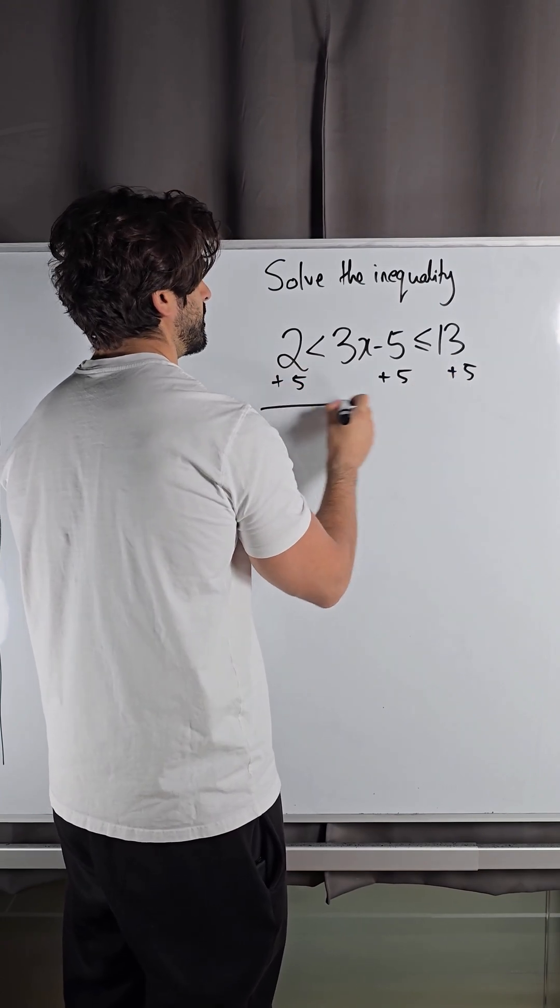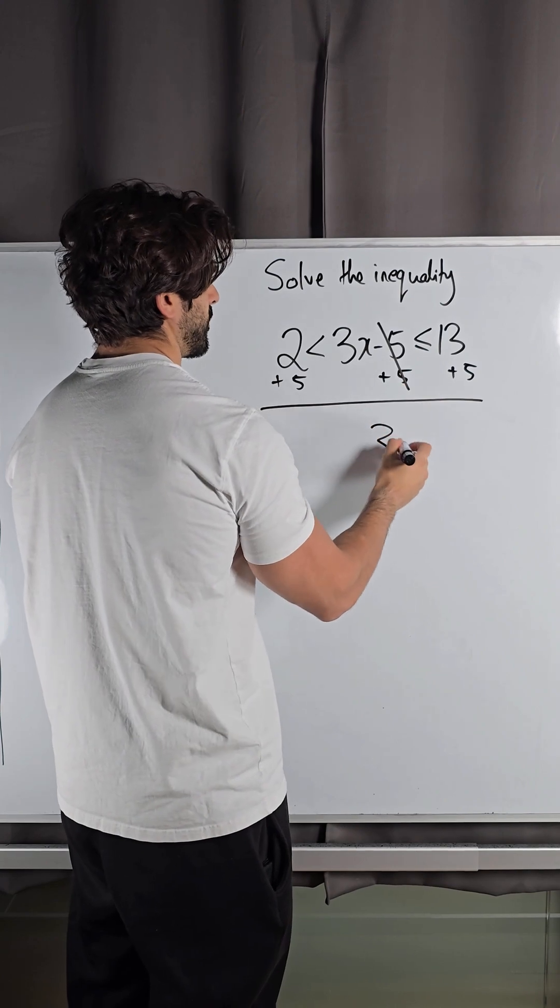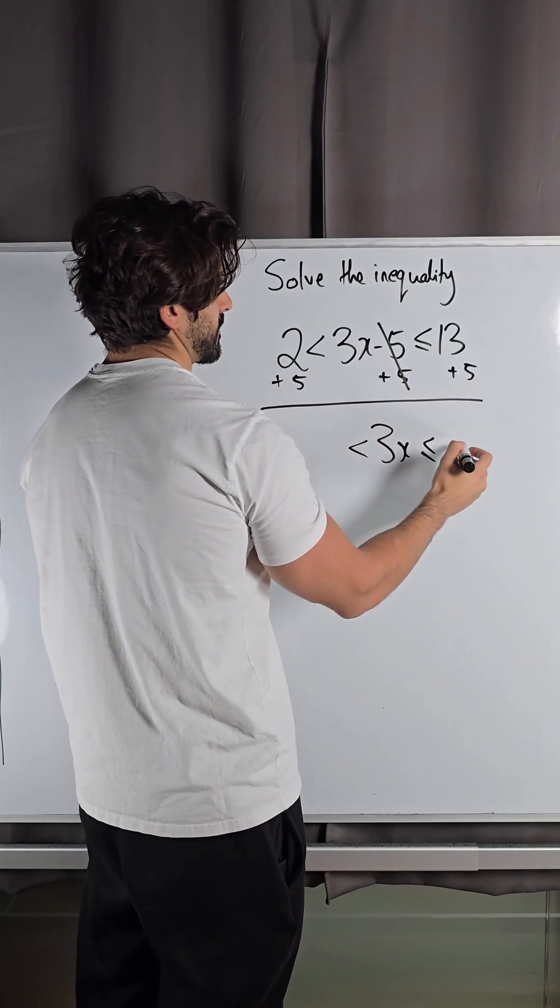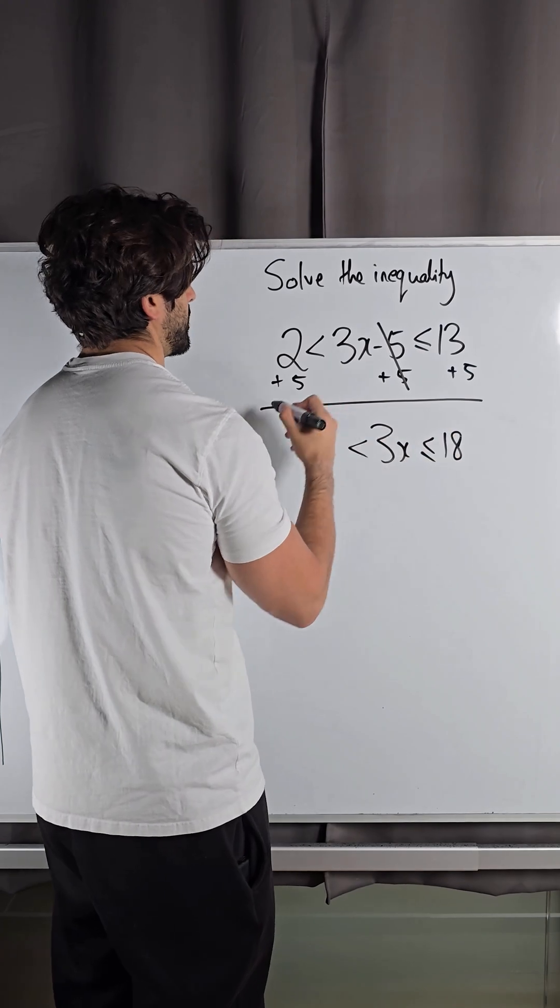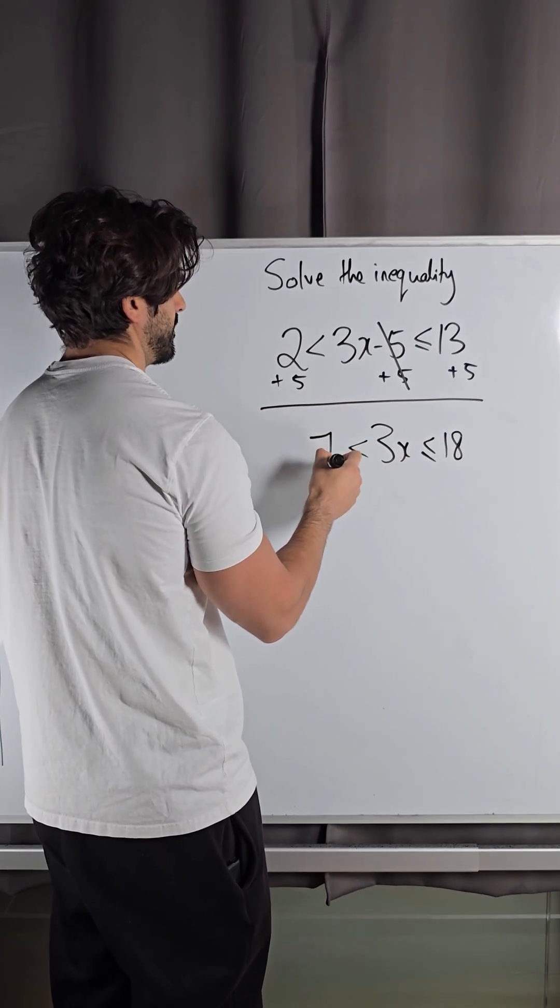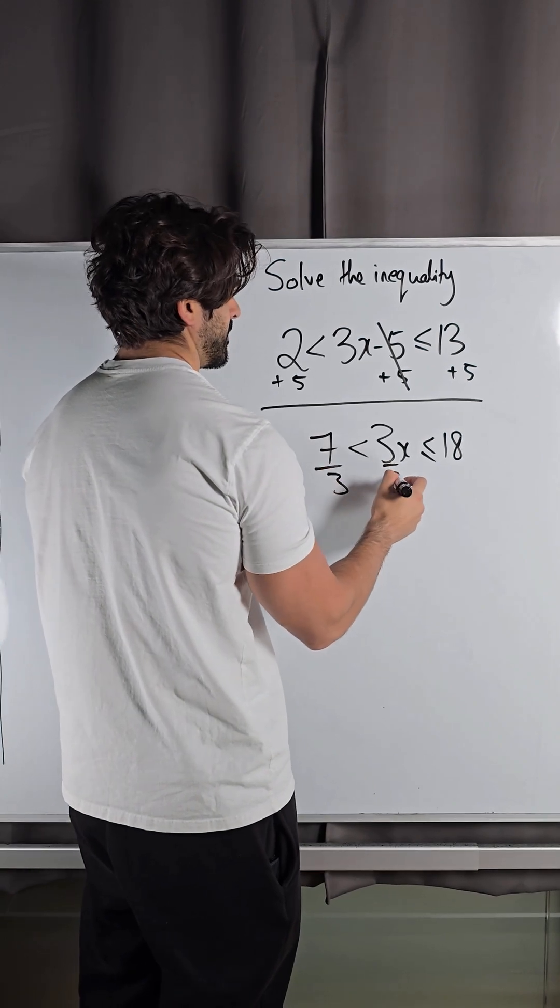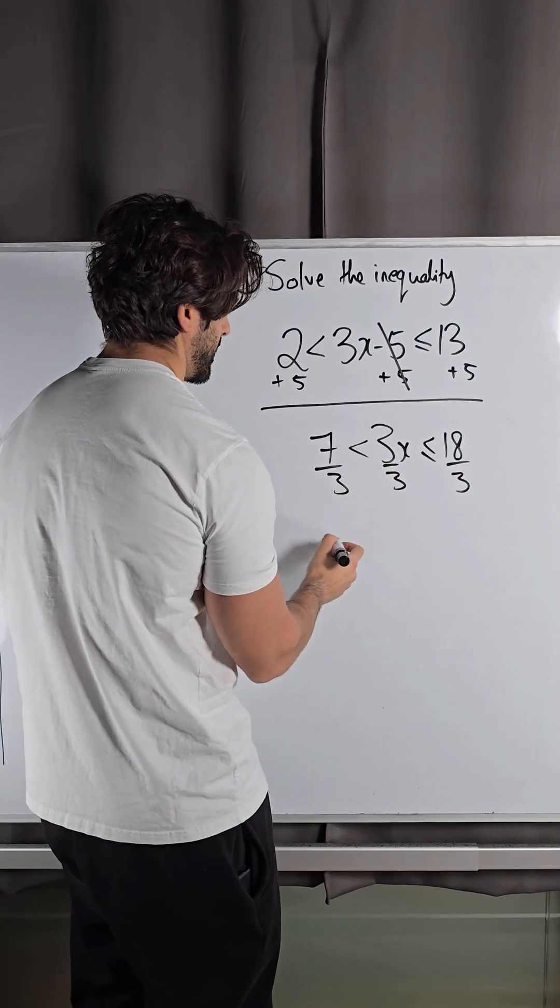So that goes, we're left with 3x is between... that plus 5 is 7 and that plus 5 is 18. Let me just divide everything by 3, so we get 7 thirds less than x less than or equal to 6.